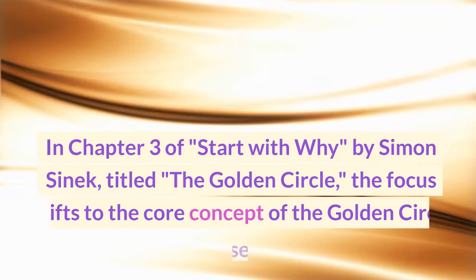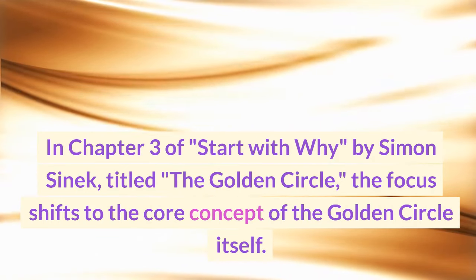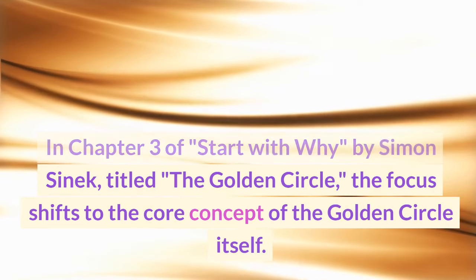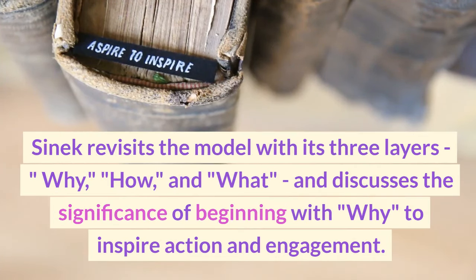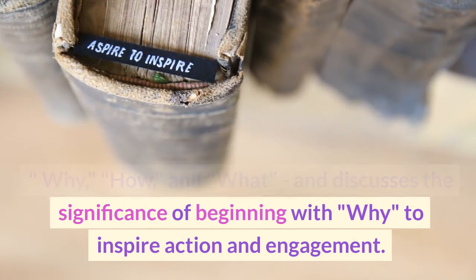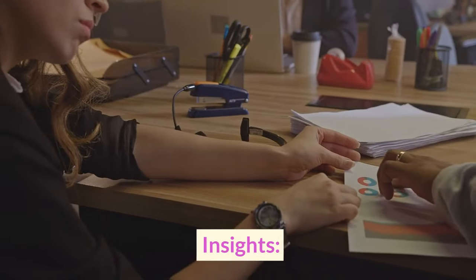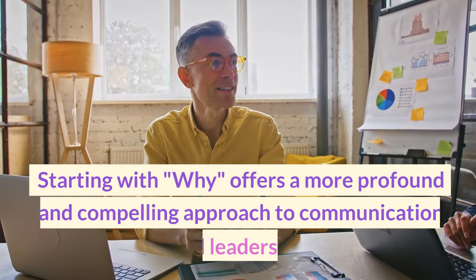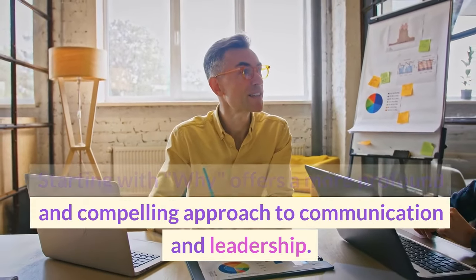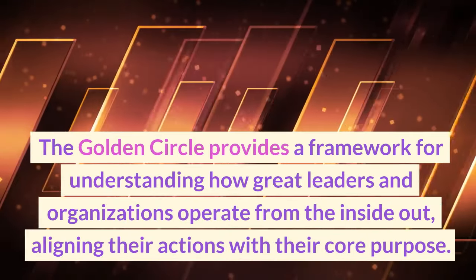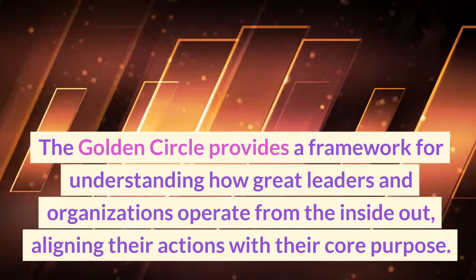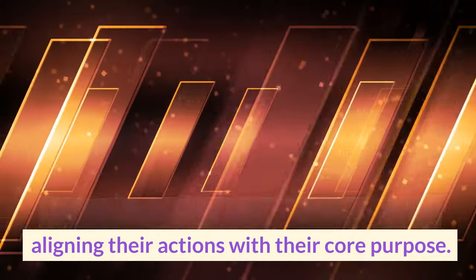In Chapter 3 of Start with Why, titled The Golden Circle, the focus shifts to the core concept of the golden circle itself. Sinek revisits the model with its three layers — why, how, and what — and discusses the significance of beginning with why to inspire action and engagement. Starting with why offers a more profound and compelling approach to communication and leadership, providing a framework for how great leaders and organizations operate from the inside out, aligning their actions with their core purpose.